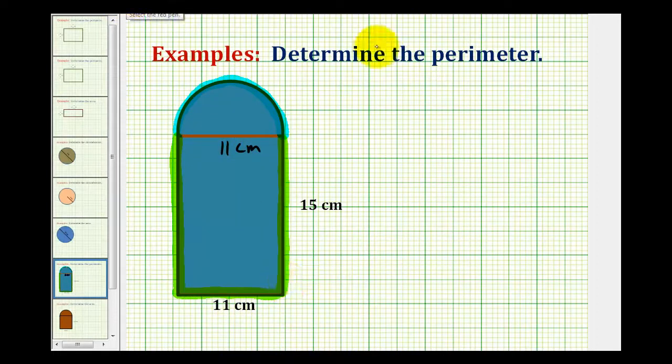The formula to determine the circumference of a circle is given by pi times d, where d is the length of the diameter, or we have two times pi times r, where r is the length of the radius.